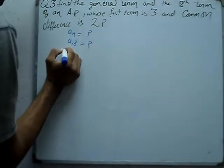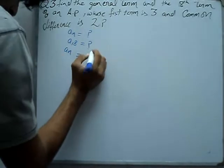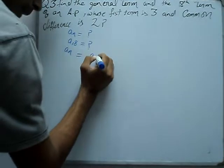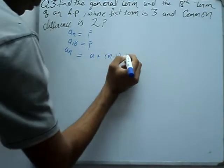For an arithmetic progression, the formula is: AN equals A plus (N minus 1) into D. This is the formula for AP.